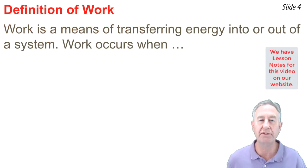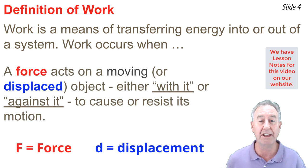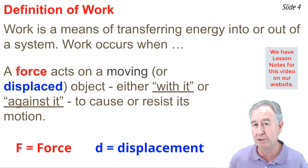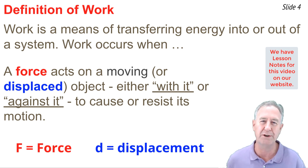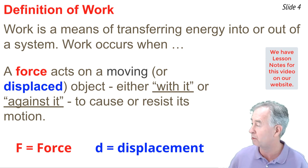In physics, work is considered a means of transferring energy to or out of an object. Work occurs whenever there is a force acting upon a moving or displaced object. That force could be with the object's motion or against the object's motion. That is, in the same direction that the object's moving, or in the opposite direction that the object's moving. When considering work, we have to think about two big ideas: force and displacement.